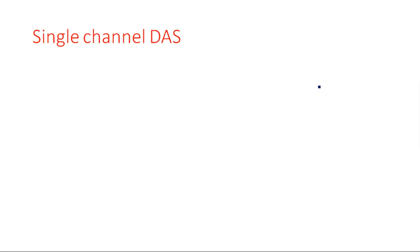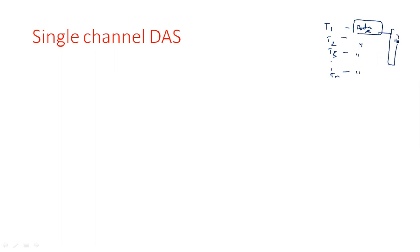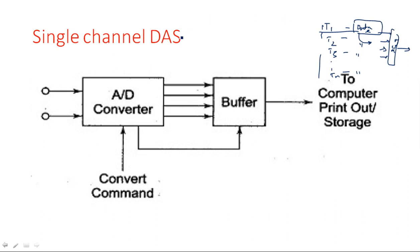Coming to the single channel data acquisition system — there is only one channel, so only one sensor or transducer can be used. In the standard data acquisition system concept we have multiple transducers T1, T2, T3 up to Tn, each having individual channels with a pre-amplification process and data acquisition. The outputs are connected to a multiplexer which merges all of them onto a single output signal. In the single channel DAS, instead of N channels, we have only one channel whose output passes through signal conditioning before going to the multiplexer.